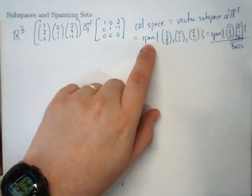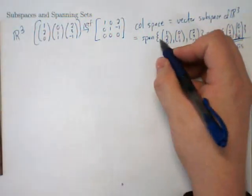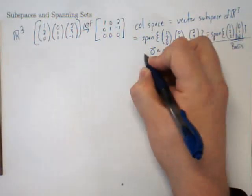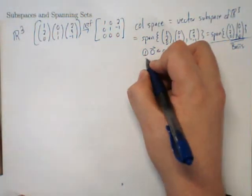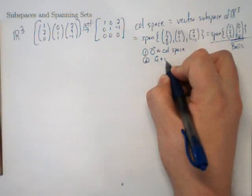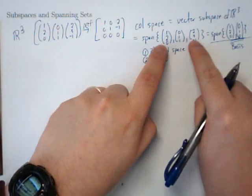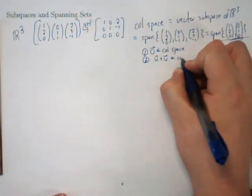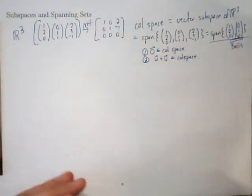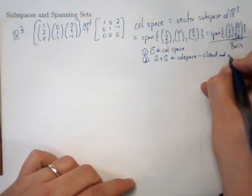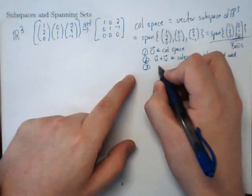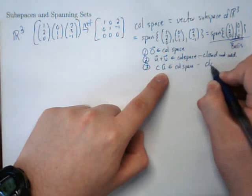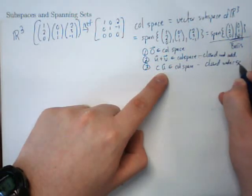In either case, the column space is the span of a collection of vectors. The key fact that it's a span means it's all linear combinations of these vectors, which in particular means if I times them all by 0, the zero vector is in the column space. I'm going to actually prove that it's a vector subspace. If I take any two vectors in the column space, their sum is still in the column space — it's closed under addition. And if I take a scalar times a vector in the column space, that's still in the column space — it's closed under scalar multiplication.